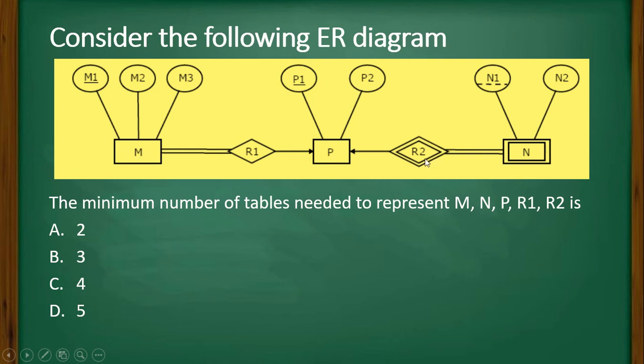On the other hand, if you look at here, N and R2, there is a total participation, and P and R2, here is a partial participation.